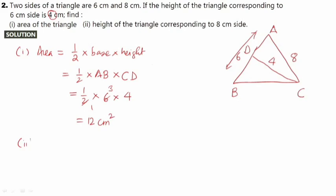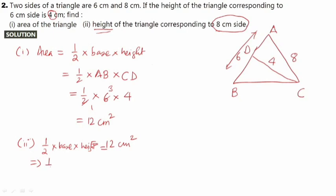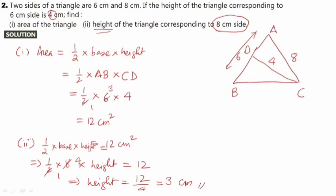For part 2, we need to find the height of the triangle corresponding to the 8 centimeter side. We know the area is 12 centimeter square. Using area = half × base × height, with base = 8 centimeter: 12 = half × 8 × height, so height = 12 divided by 4, which gives 3 centimeter. You may pause the video and note down your solution.